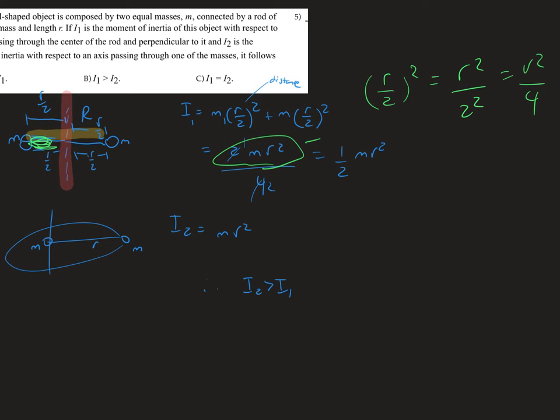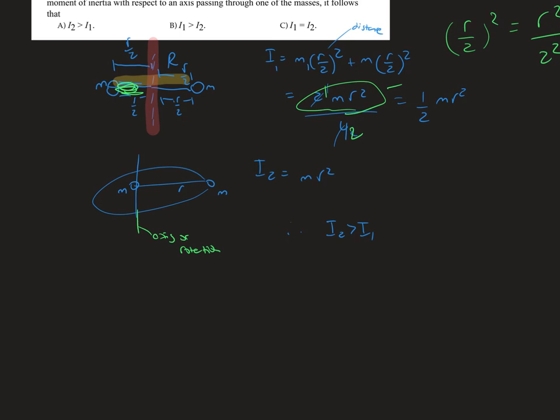So for the moment of inertia 1, we should get one half of mr squared, as we cancel out the 2 and then this leaves us with the 2.